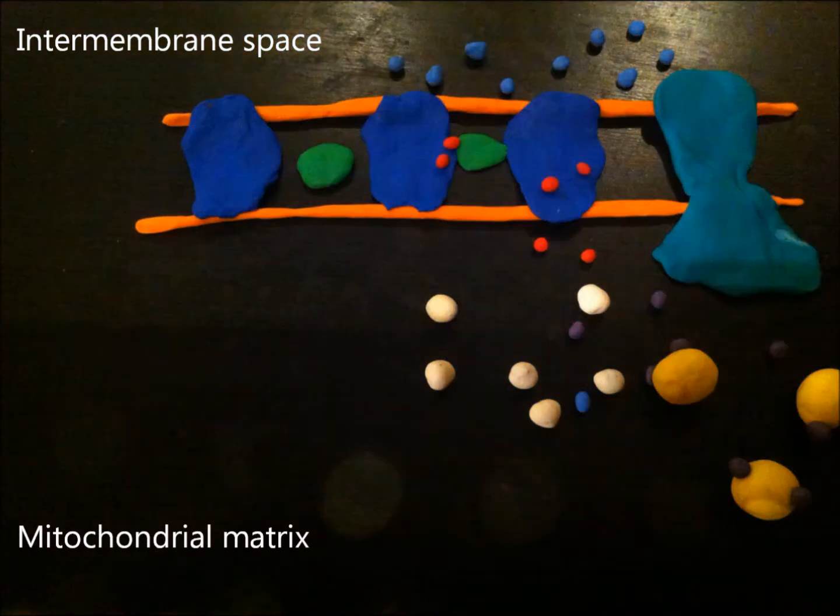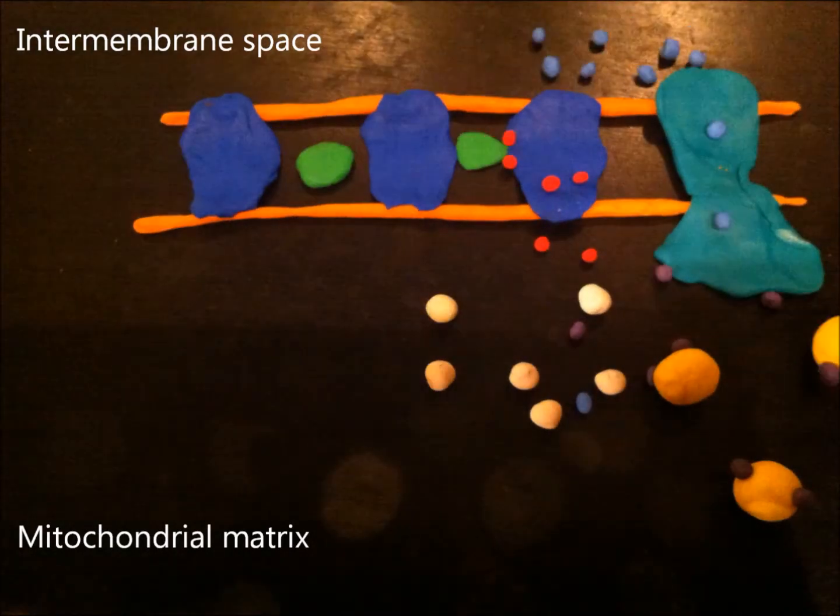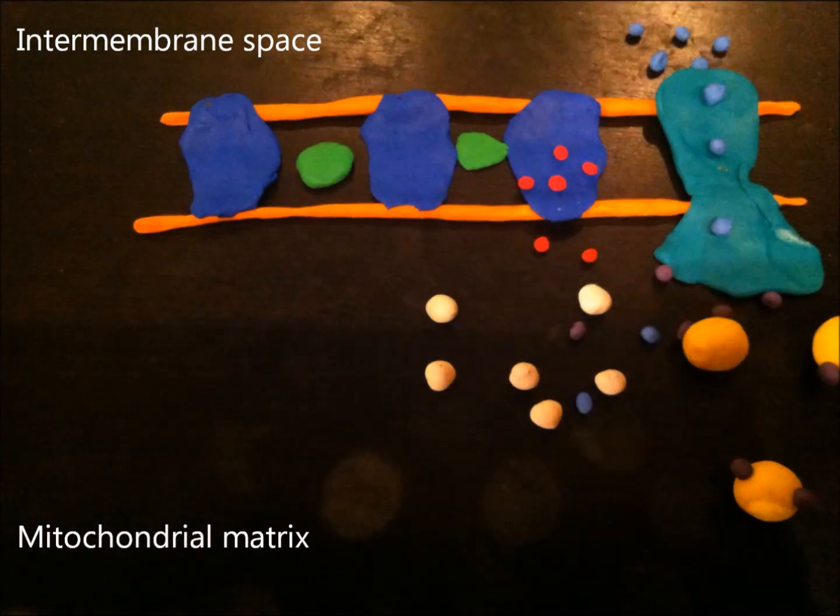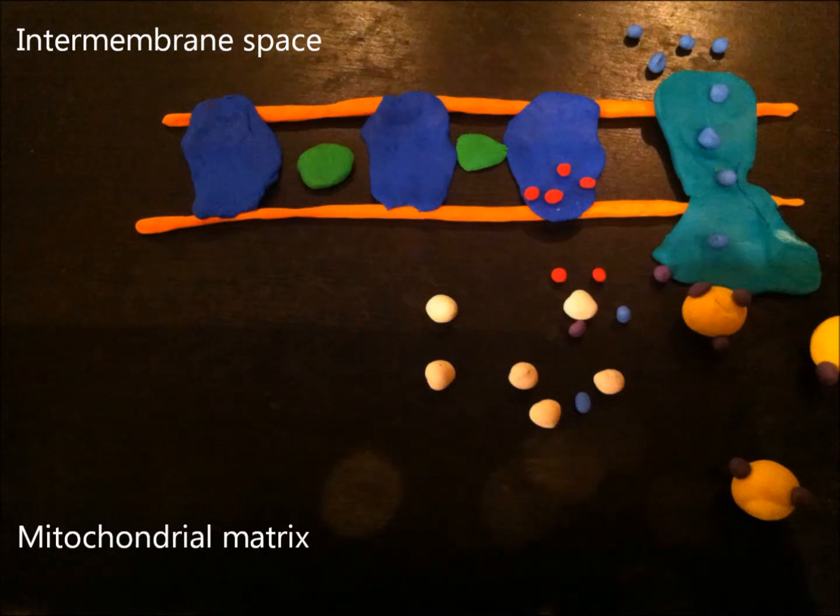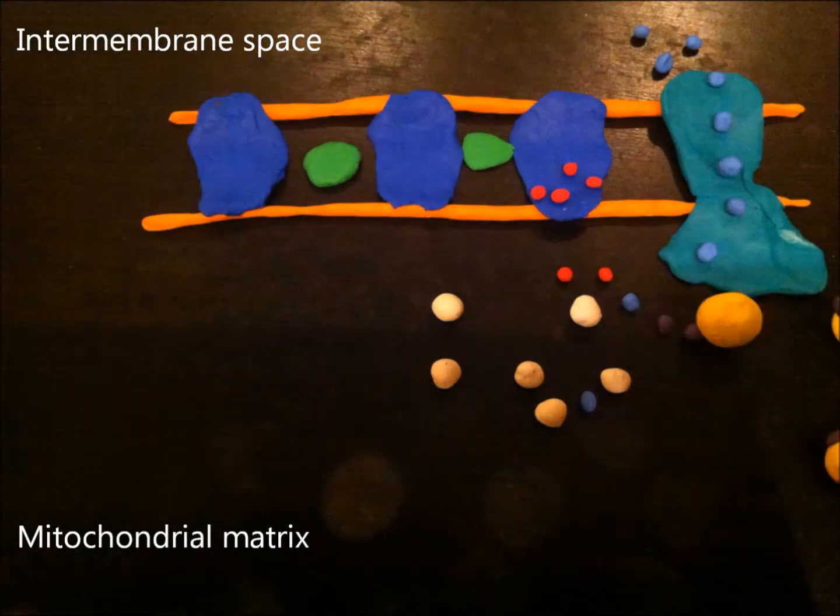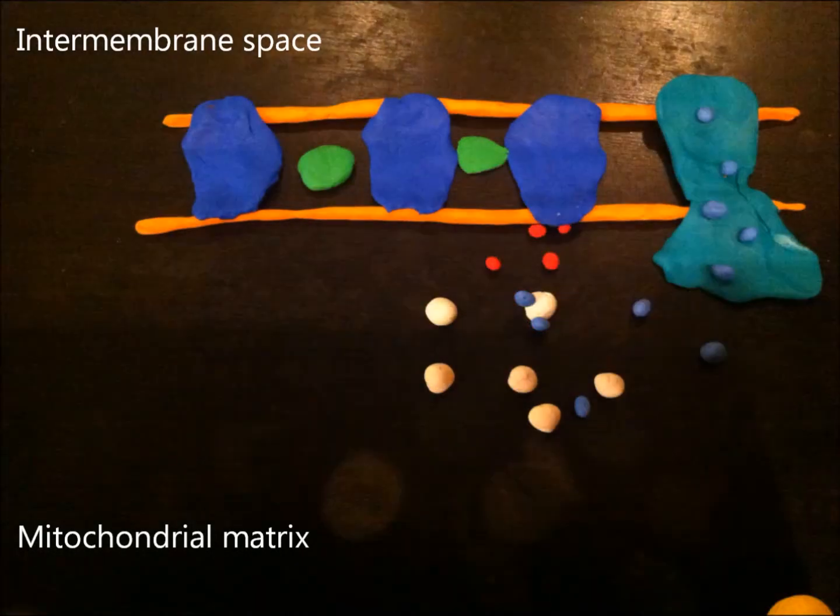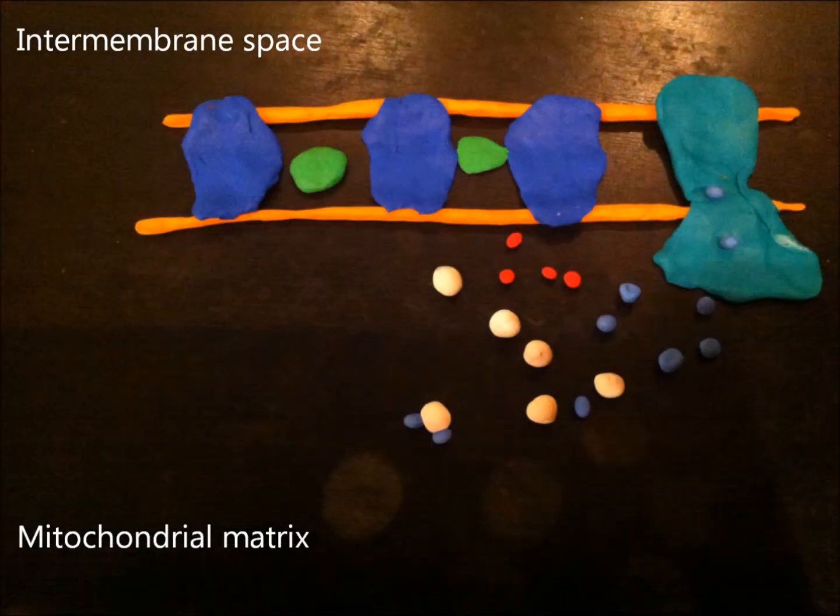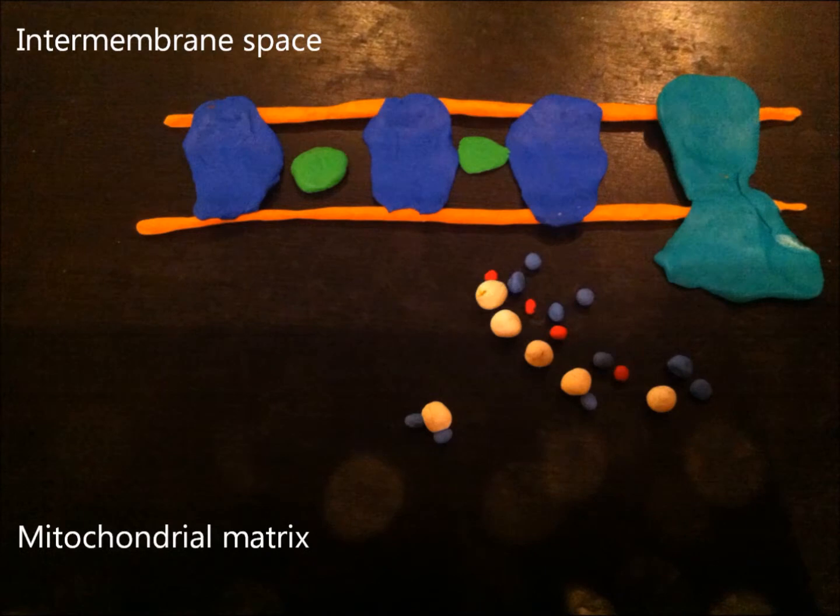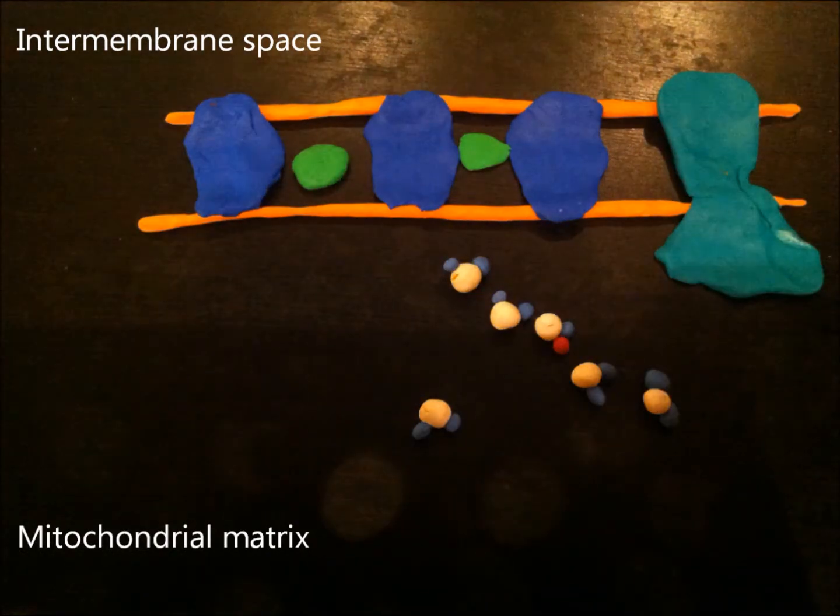The hydrogen protons will be sent through the ATP synthase enzyme into the matrix. This creates enough energy to bind ADP and inorganic phosphates. Electrons and hydrogen protons will be gathered with the final electron acceptor, oxygen, where it will produce water.